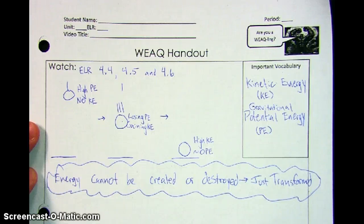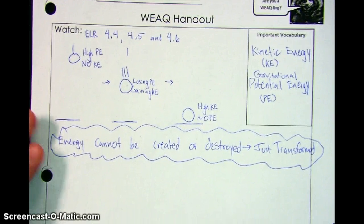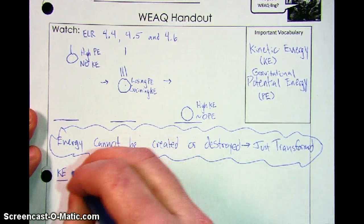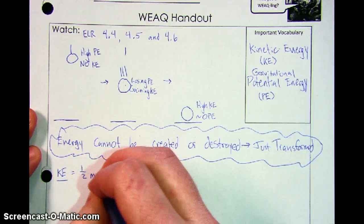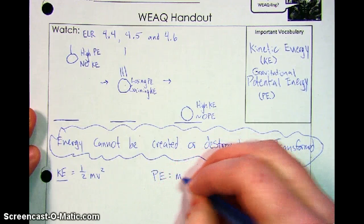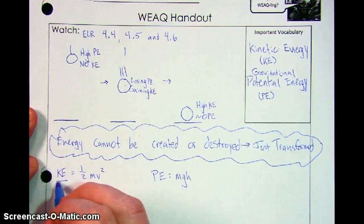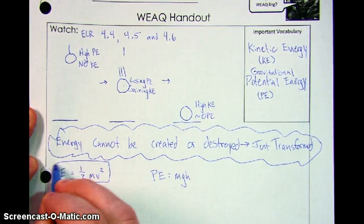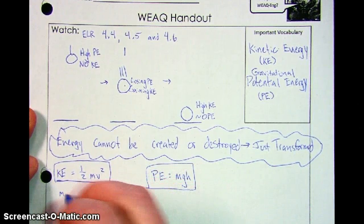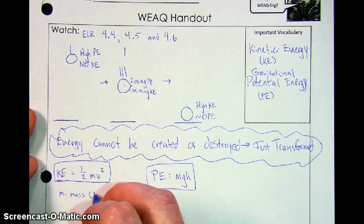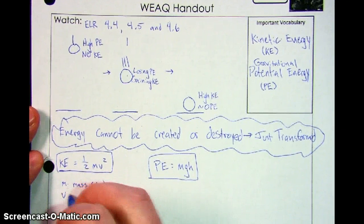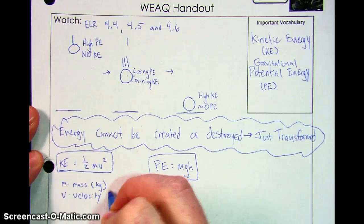Let's talk about how we're going to use the equations. For kinetic energy, the equation is one-half mv squared. Let's talk about the parts and pieces. For kinetic energy, m of course stands for mass, and we're going to be using kilograms. The v stands for velocity, and like always we're going to use meters per second.